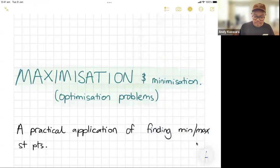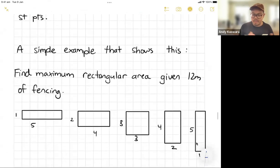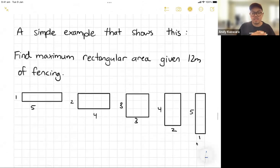So it's going to feel like stationary points. A simple example that shows this is: find a maximum rectangular area given that you have 12 meters of fencing. So really quickly what I've drawn out here, and this is not the mathematical way to do it, this is just a guess and check slash problem solving way, you can see that all of these rectangles here will have a perimeter of 12 meters but they're all going to give different areas. For example that's five meters squared because one by five.